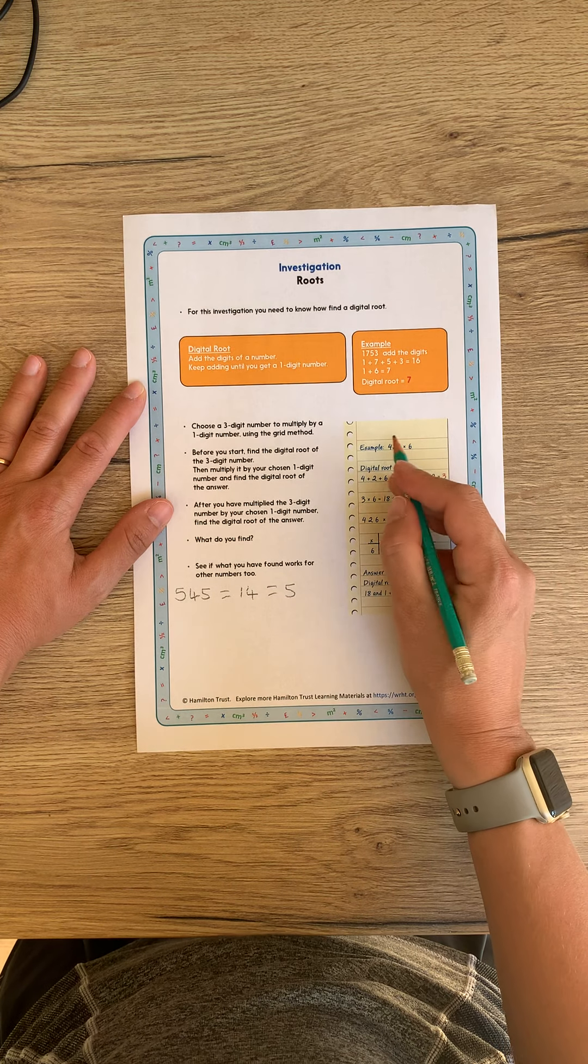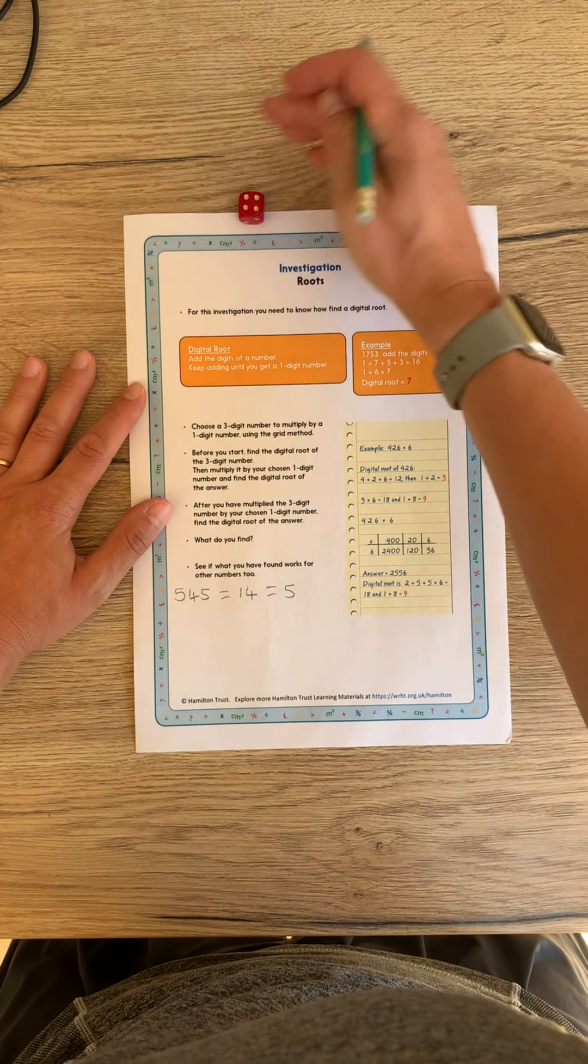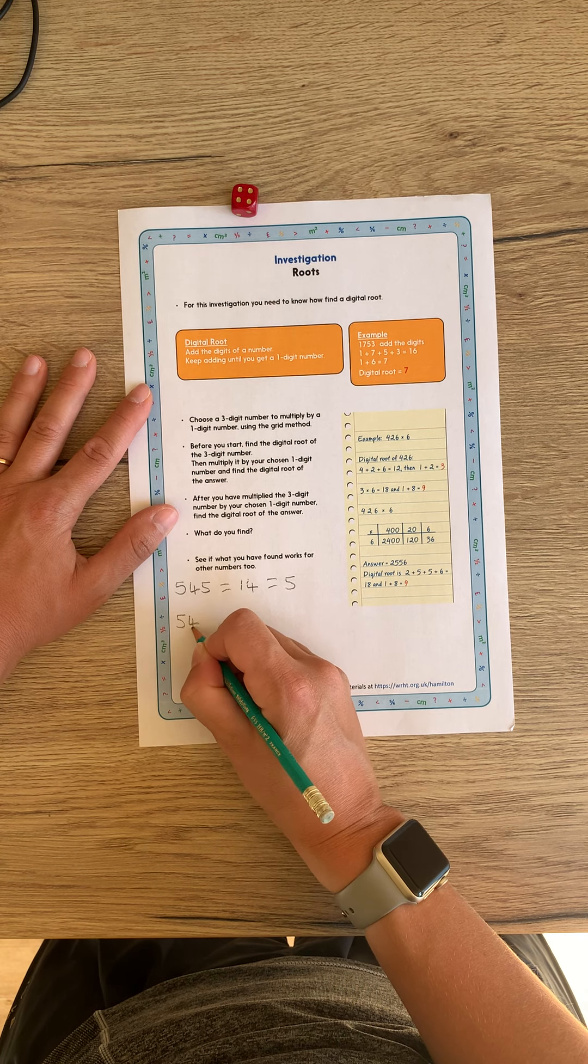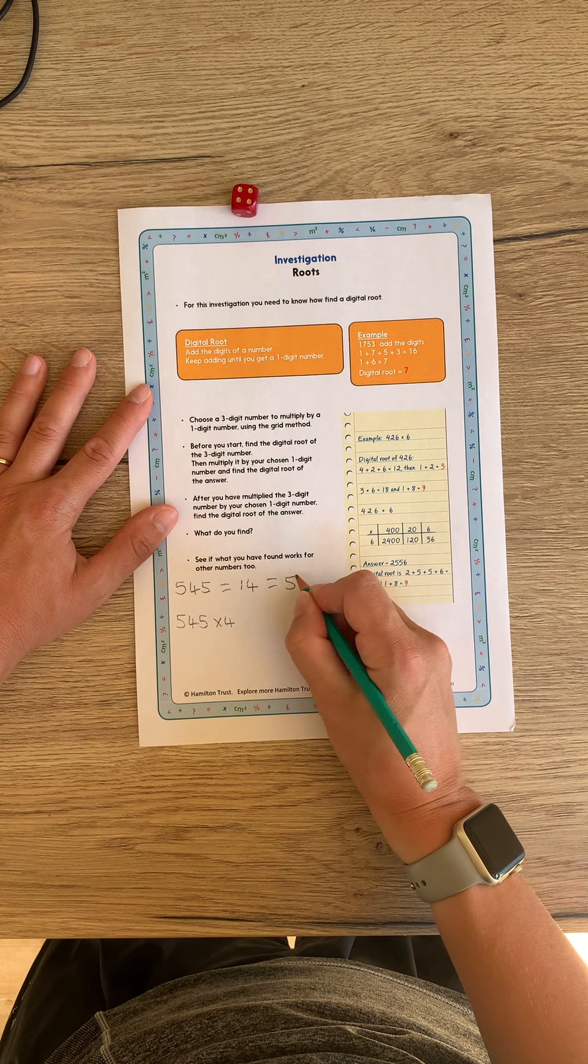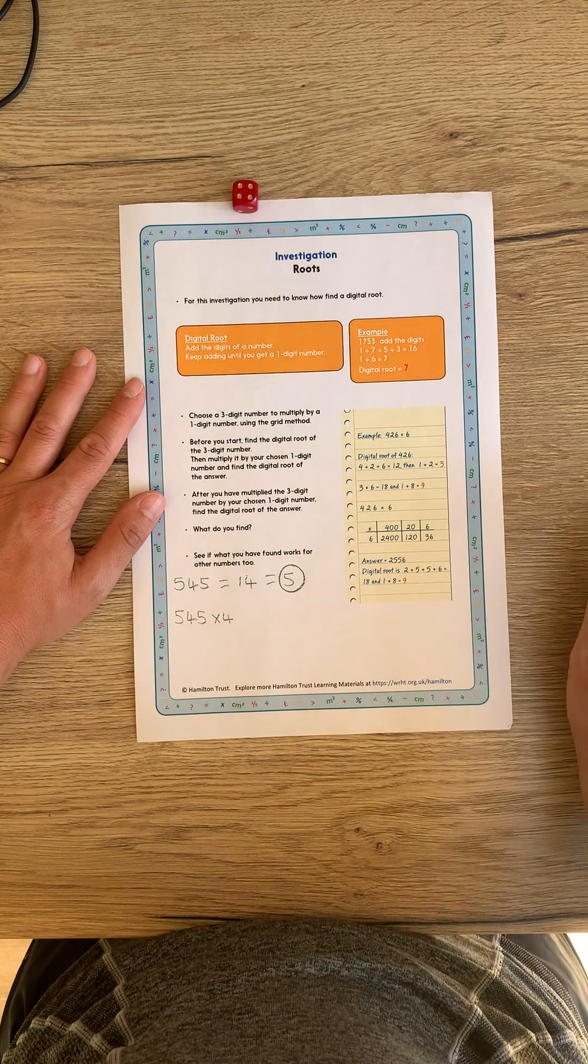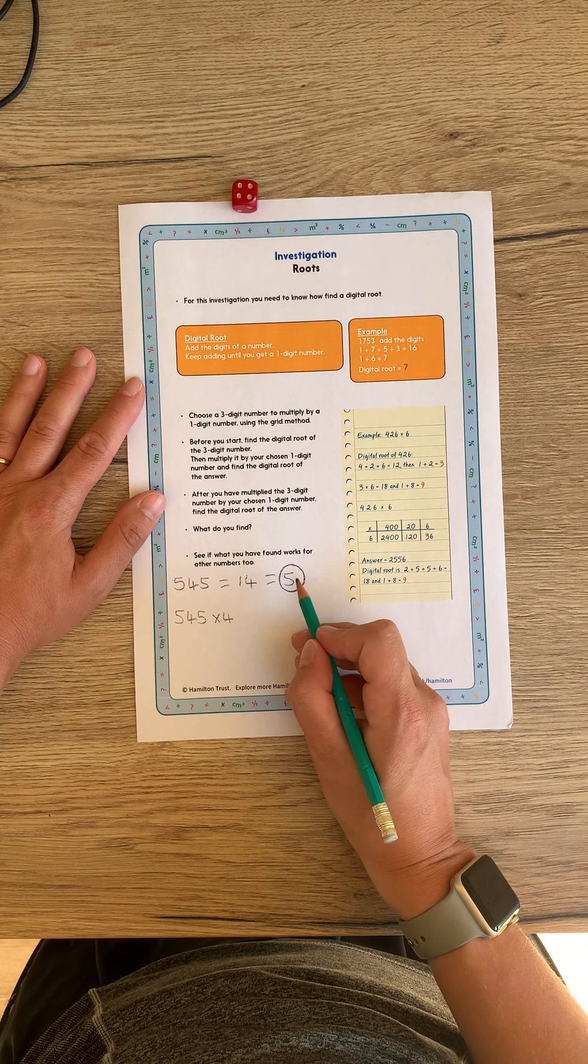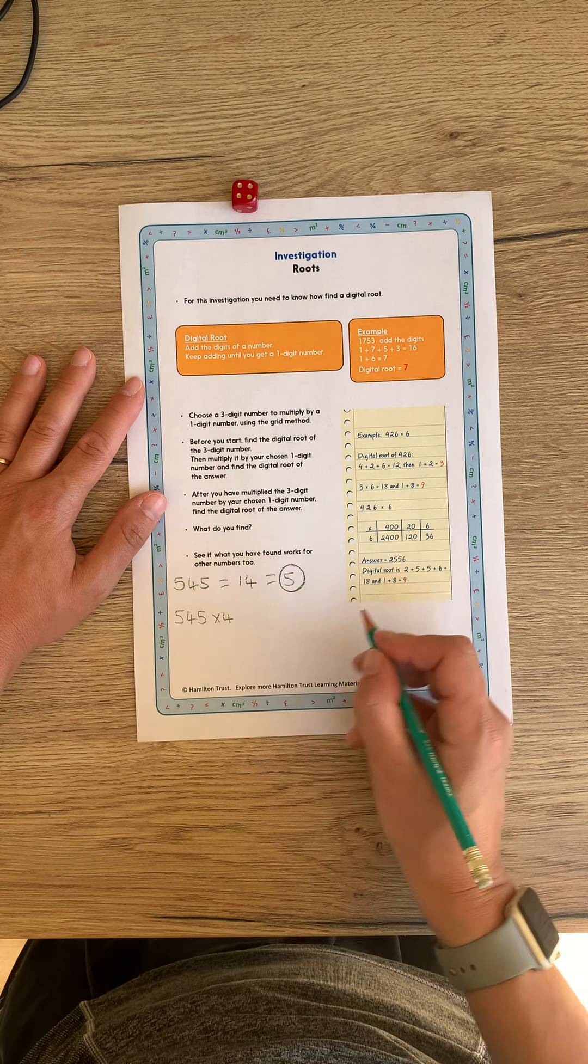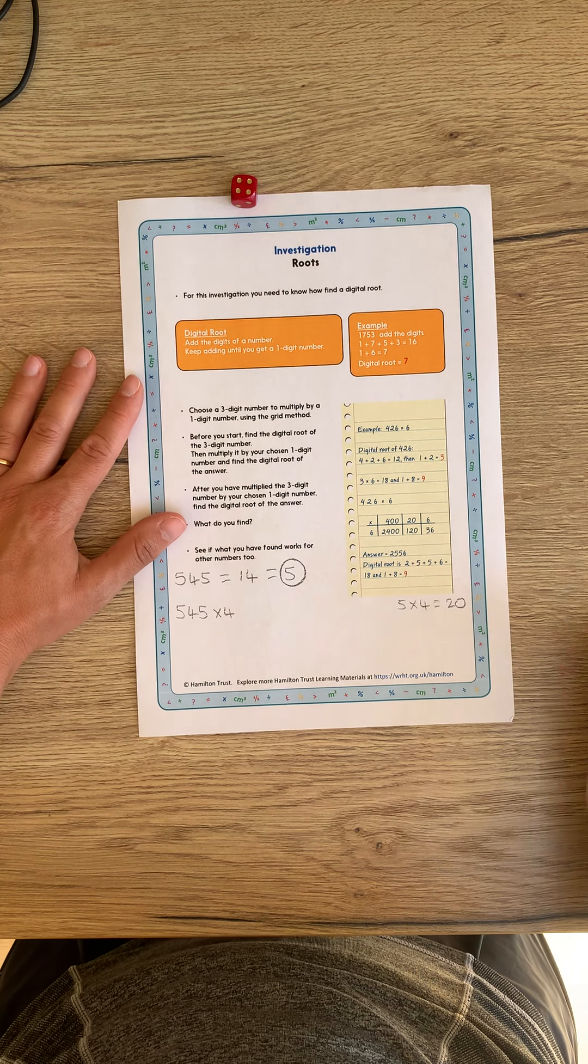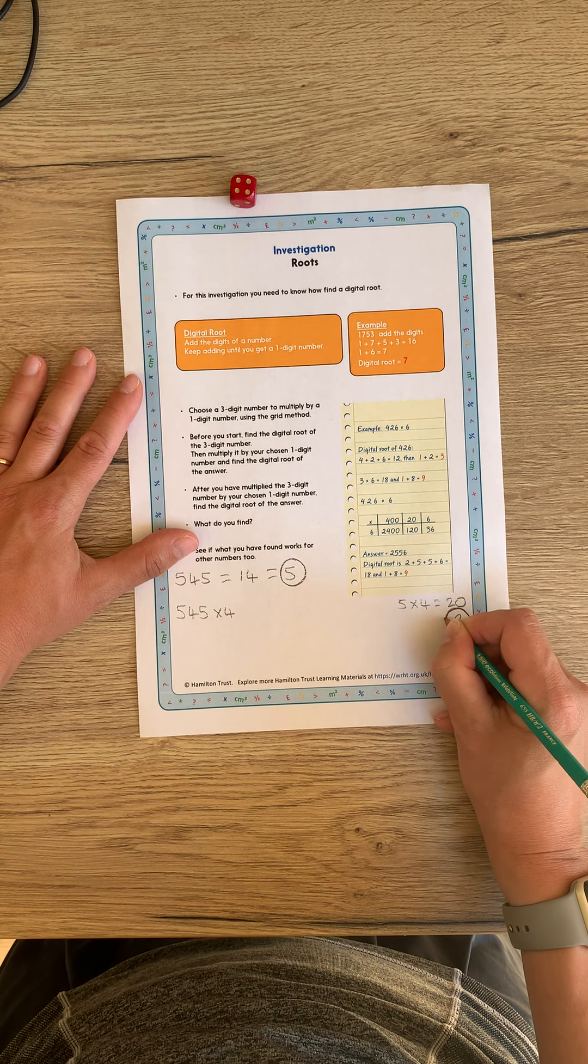So I've added my digital route to my three-digit number. And it's then asking you to put it into a number sentence with multiplying it by a one-digit number. So I'll roll the dice again. Four. Oh, is that on screen? Yep. Gosh, my dicey obviously likes fives and fours. So my number sentence is 545 multiplied by four. Now, I know that that is my digital route so far. So we have, next, it's asking us to multiply it by your chosen one-digit number and find the digital route of the answer. So I have five multiplied by four. So I'll do this over here. Five multiplied by four equals 20. And the digital route of 20, two and zero is two. That is the important one. Two.